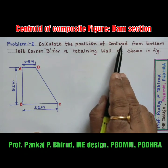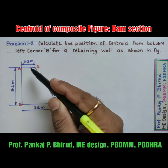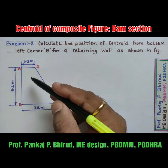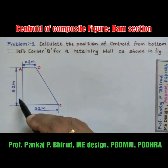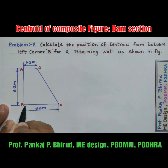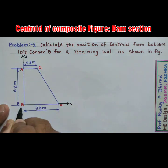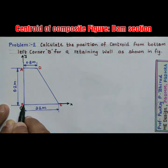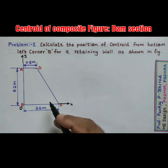Read the problem carefully — sometimes the position of the centroid will be asked from the top. In this problem it is from the bottom left corner. So our first step is to place the figure in the first quadrant. Take the dam section in the first quadrant and let OX and OY be the reference axes. We will calculate X-bar and Y-bar from the origin O.